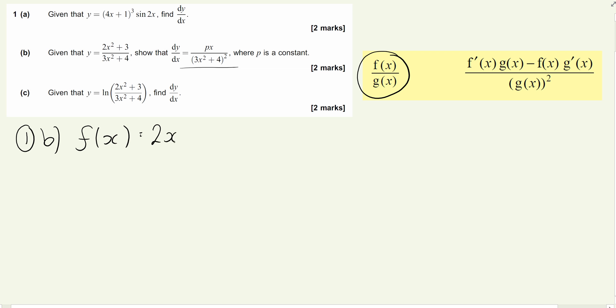f(x) is 2x² + 3, and g(x) is the bottom, the denominator, 3x² + 4. Nothing particularly tricky in the differentiation here. This one goes to 4x, and g'(x) will go to 6x.